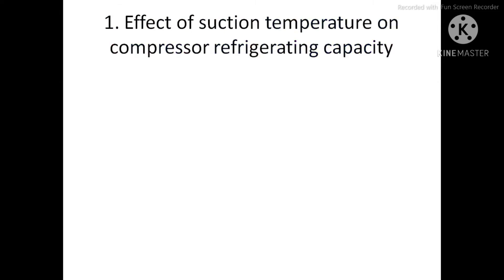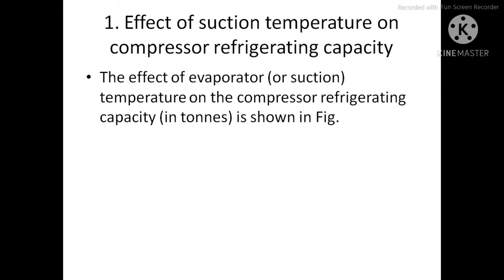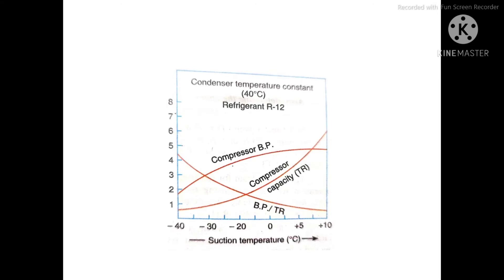First, let's look at the effect of suction temperature on compressor refrigerating capacity. The performance curves for the reciprocating compressor are shown in the figure, with suction or evaporator temperature in degrees Celsius on the x-axis. Three performance parameters are plotted: compressor capacity, compressor brake power, and brake power per ton of refrigeration.